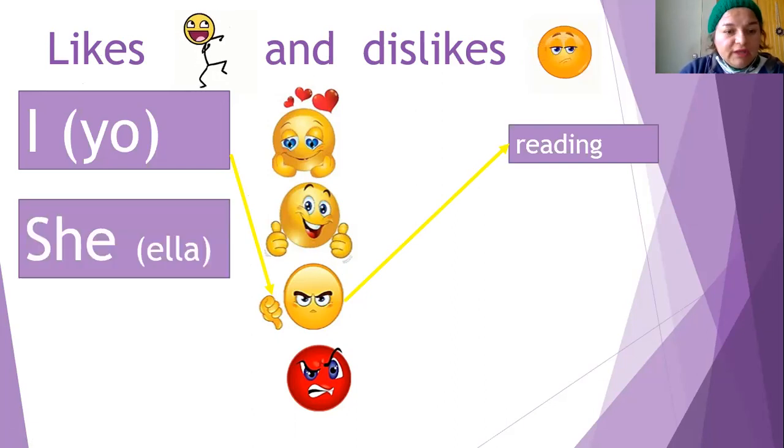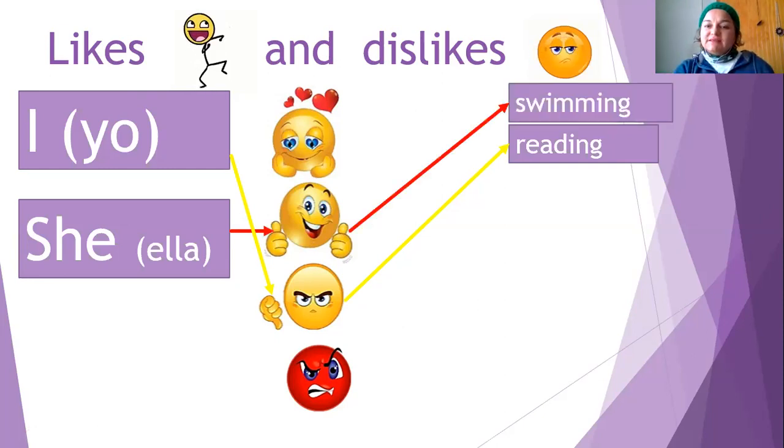Tenemos otro sujeto. She. Ella. She. Entonces seguimos la flechita. She likes. She likes swimming. She likes swimming.